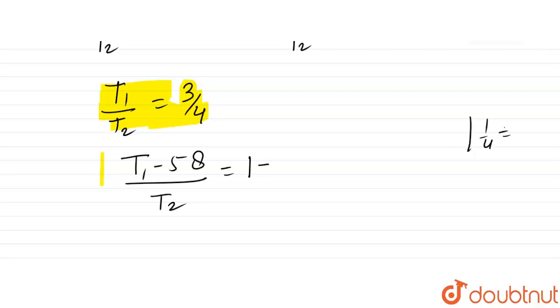When the temperature is reduced by 58, the efficiency becomes 1/2. So (T₁ - 58) upon T₂ equals 1/2. We have a second equation here. This is equation number 2.